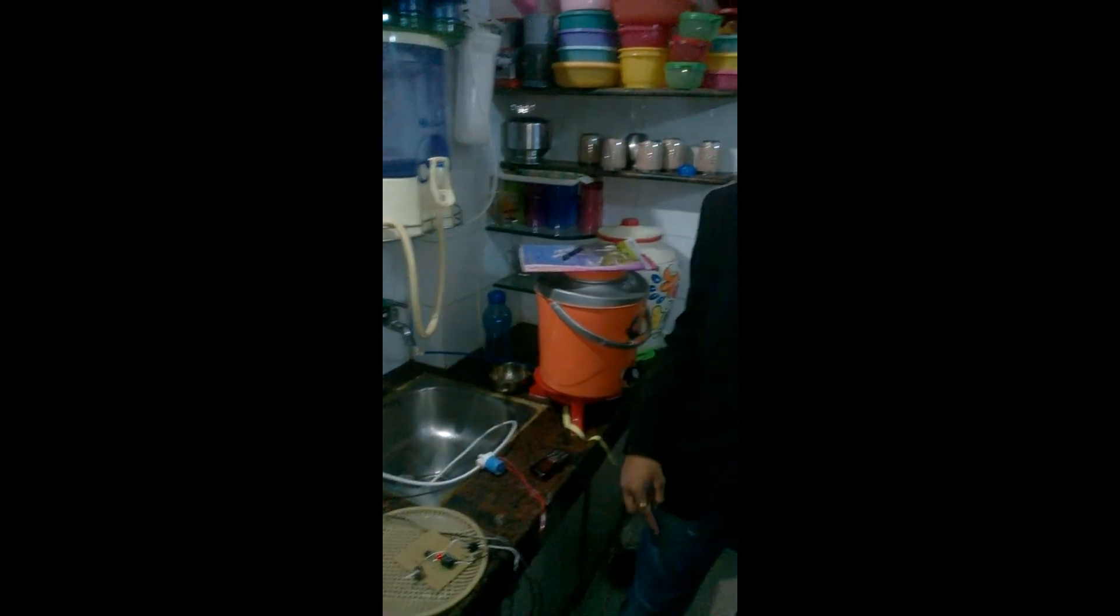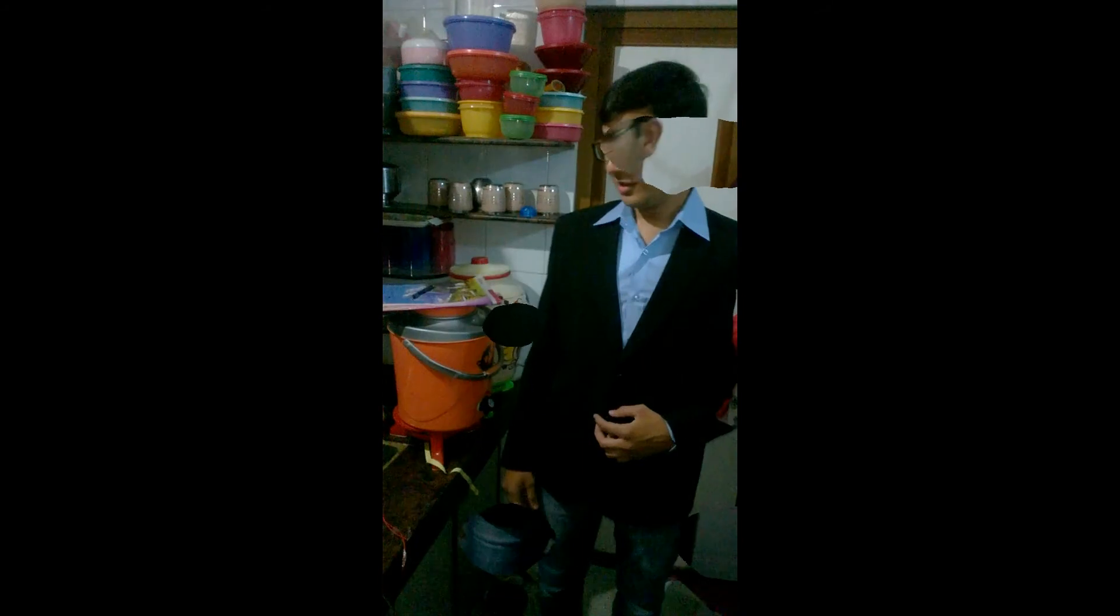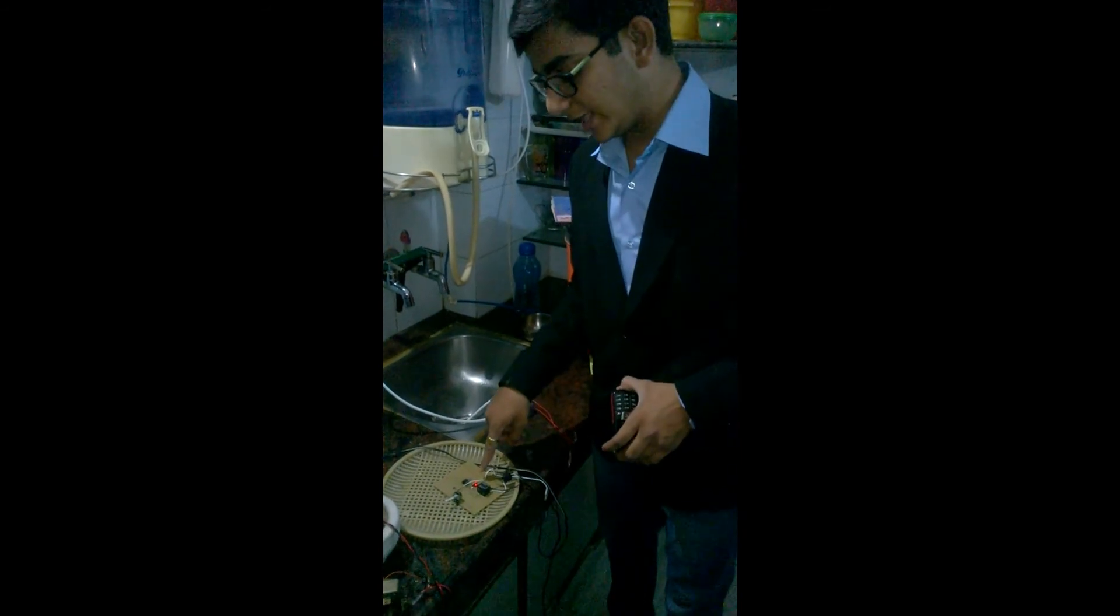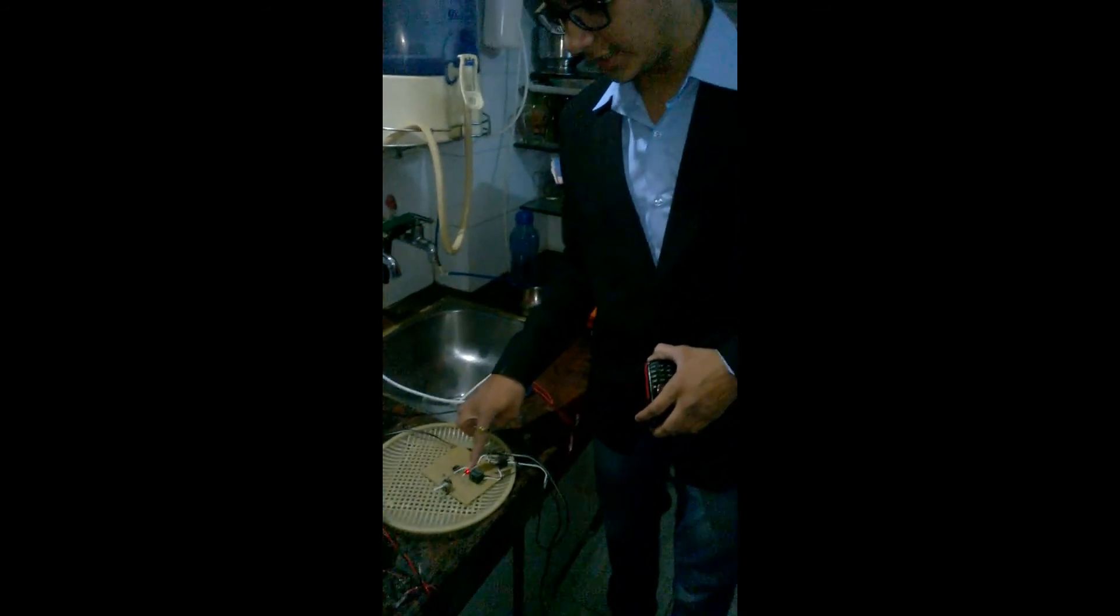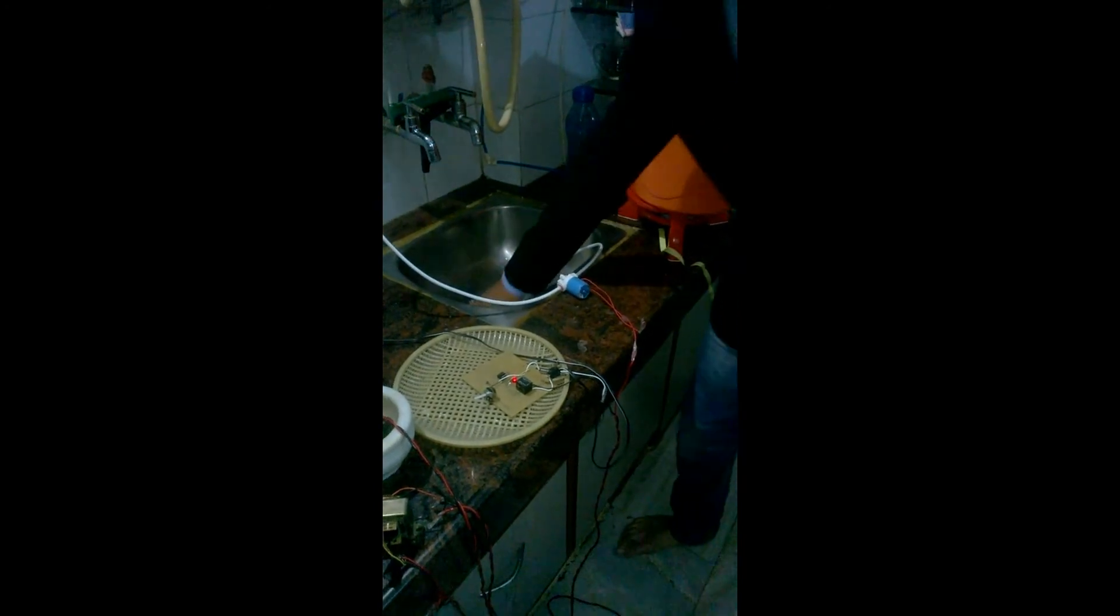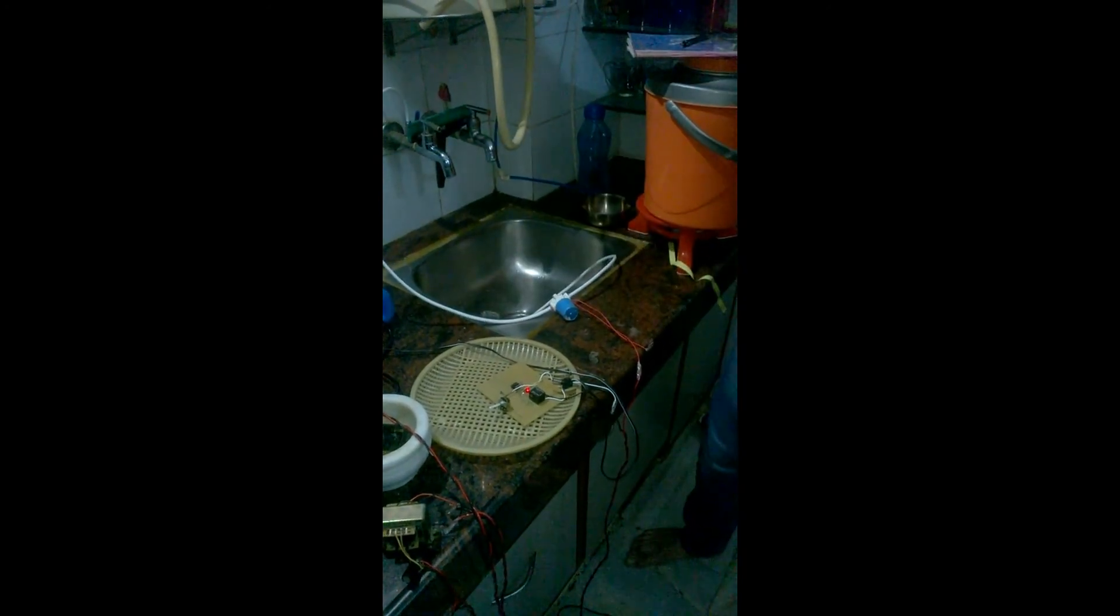The water will not be added to the reserve tank. Now I will show you the practical work of my circuit. This is in the night mode, so the red light is on and the solenoid valve is off, so the water is not coming outside the SV.